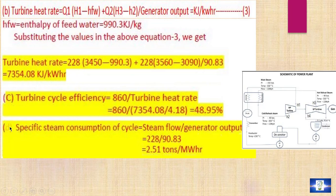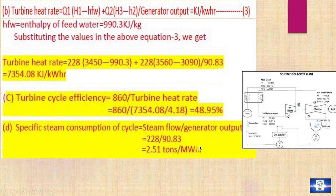The fourth question is the specific steam consumption of the cycle. Specific steam consumption equals steam flow divided by generator output: 228 ton/hr ÷ 90.83 MW. The specific steam consumption of the cycle is 2.51 ton per MWh.